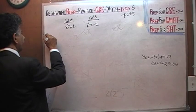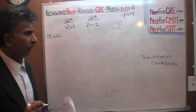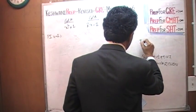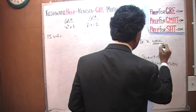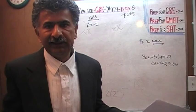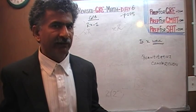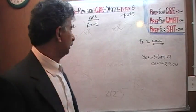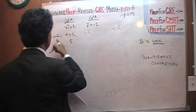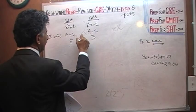Let's plug in x equal to 2. If x were 2 — and we say 'were' because we are speaking hypothetically; we do not know the value of x — x squared would be 4, and 4 plus 1 is 5. In column B, 2 times 2 is 4, and 4 minus 1 is 3. Five is more than 3, so the answer in this case is A.